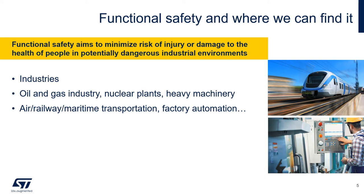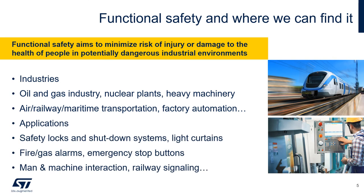Let's take the nuclear plants or mass transportation systems as an example. An automated production line is also a potentially dangerous environment for its workers. That's why protection measures and processes must be implemented, and this is the task for applications like safety locks, emergency stop buttons, and safety signaling.